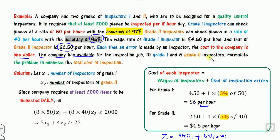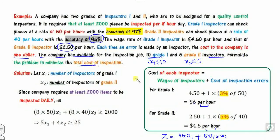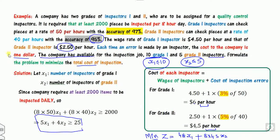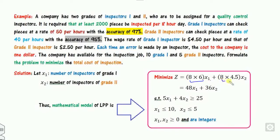The company has available a maximum of 10 grade 1 inspectors, and similarly a constraint for grade 2. The full formulation is: minimize 48X1 + 36X2, subject to the 2000-piece constraint, the inspector availability constraints, and the non-negativity integer conditions. This completes the formulation.